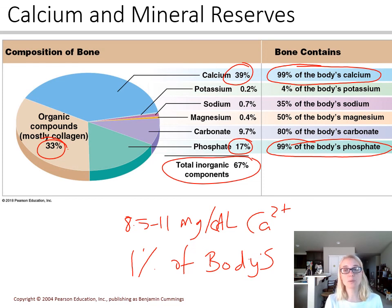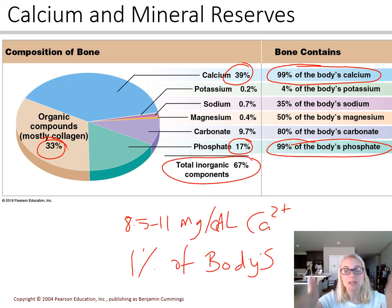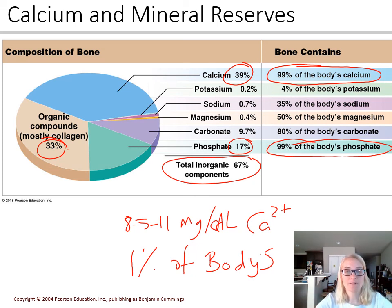Only 1% of all of your body's calcium is regulated by PTH and calcitonin to stay within that 8.5 to 11 milligrams per deciliter range.